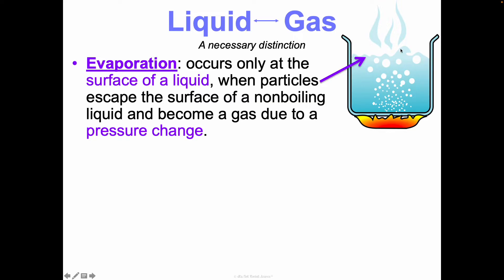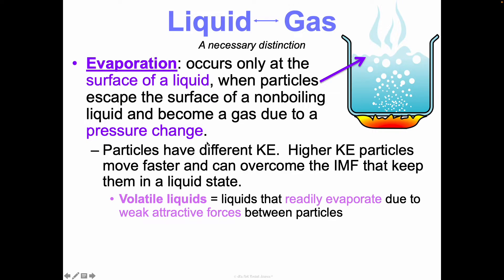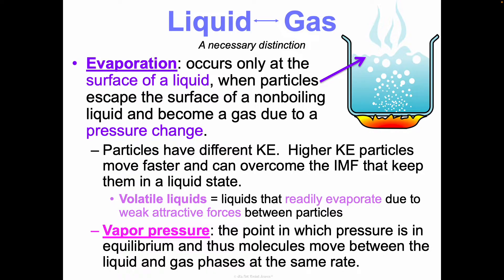Evaporation only happens at the surface of a liquid. Particles with higher kinetic energy can overcome the intermolecular forces keeping them in the liquid state and escape as a gas — this can happen even at room temperature, like water evaporating from a cup on your bedside table. Volatile liquids readily evaporate due to very weak attractive forces between their particles. Vapor pressure is the point at which pressure is in equilibrium, meaning molecules move between the liquid and gas phases at the same rate — evaporating and condensing equally.